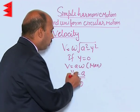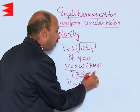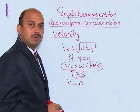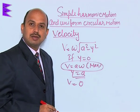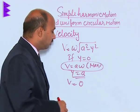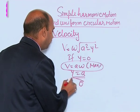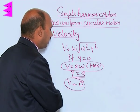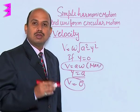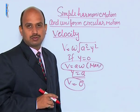So this is called the amplitude of velocity. When the particle is at the mean position it has maximum velocity, and when the particle is at the extreme position it has zero velocity.